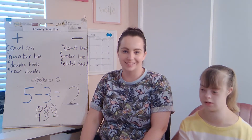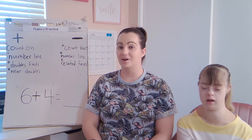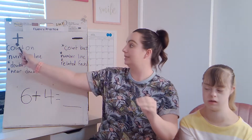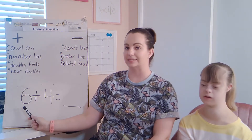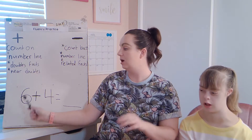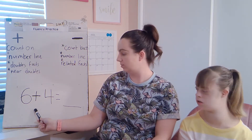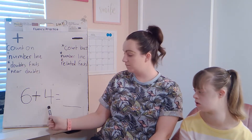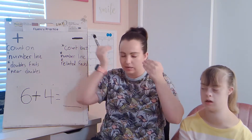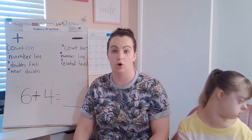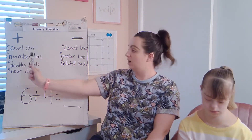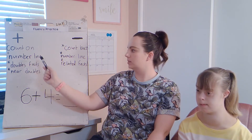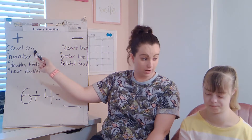Let's get ready for our next problem. Here we are with our next problem. Let's go ahead and read it so we see what we're doing. Always double check what sign you see. Ready, set, read with me: six — plus, so now we're doing addition — plus four equals. Six plus four equals. This is when we think back in our memory and decide how we want to solve the addition problem. I could count on. I could make a number line. I don't think this is a doubles fact, and it's not quite a near doubles fact. So I'm going to go ahead and count on.